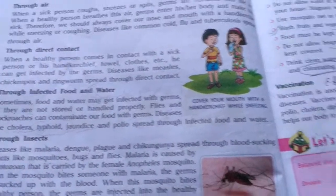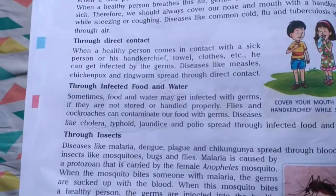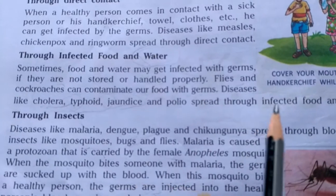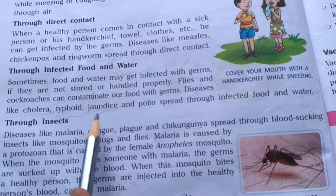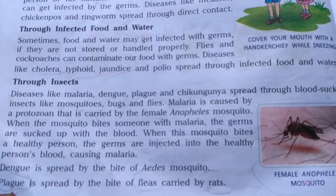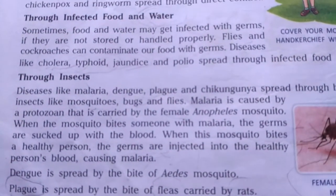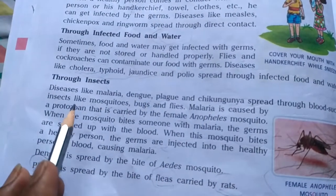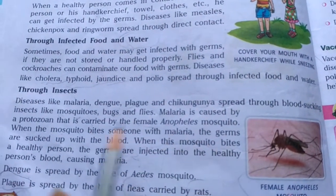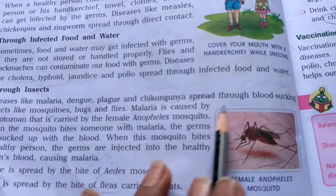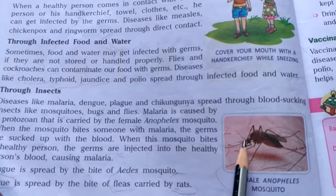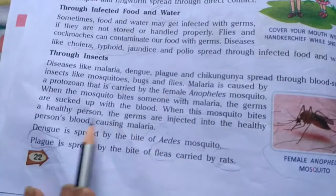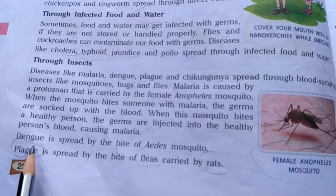Through infected food and water — if food and water are not covered or handled properly, flies and cockroaches can contaminate them with germs. Diseases like cholera, typhoid, jaundice, and polio spread this way. Through insects — malaria, dengue, plague, and chikungunya spread through blood-sucking insects like mosquitoes, bugs, and flies. Malaria is caused by a protozoan carried by the female Anopheles mosquito; dengue is spread by the Aedes mosquito; plague is spread by fleas carried by rats.